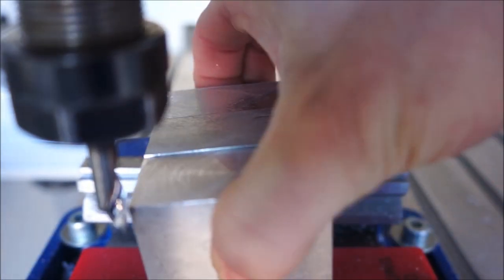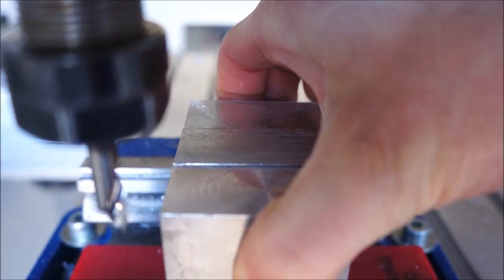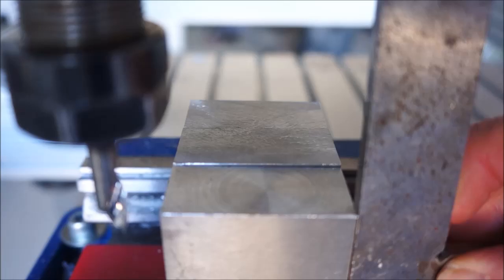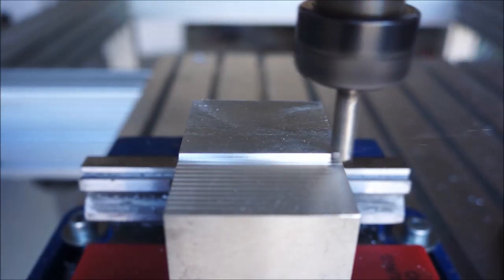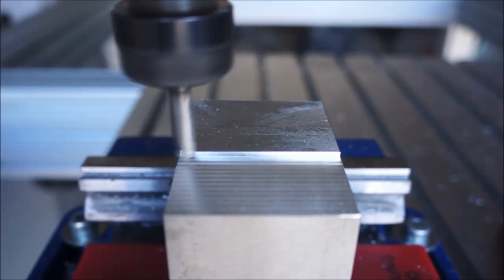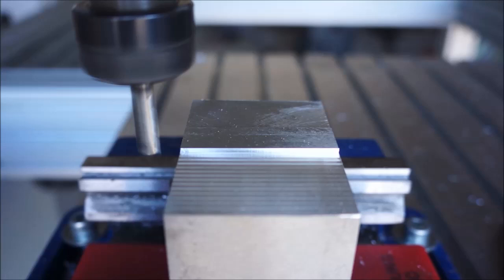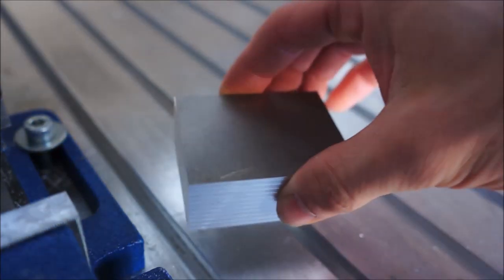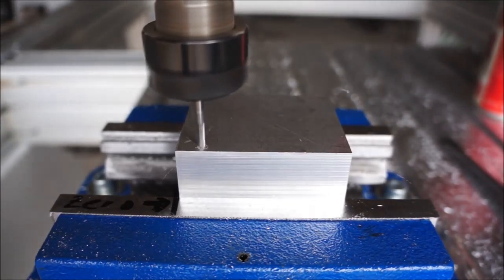So the last video was about step clamps and this video is about the corresponding step blocks. The first step was to machine some rectangular blocks. Then they got split into triangles.